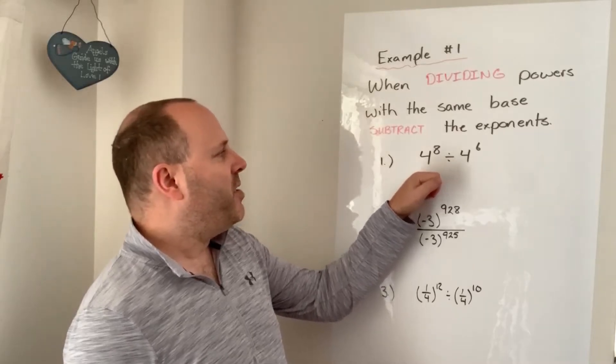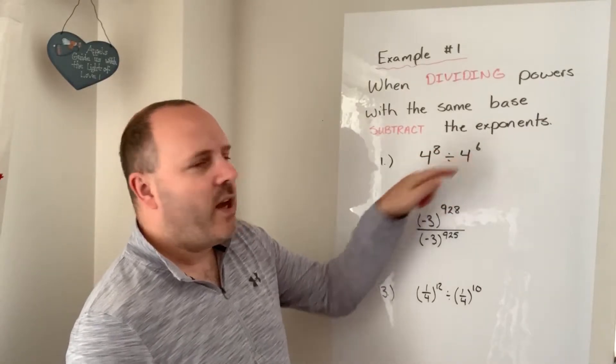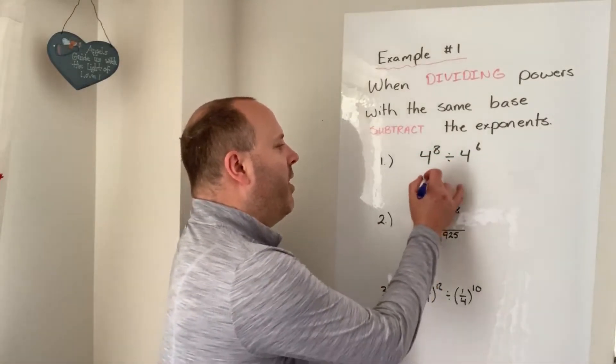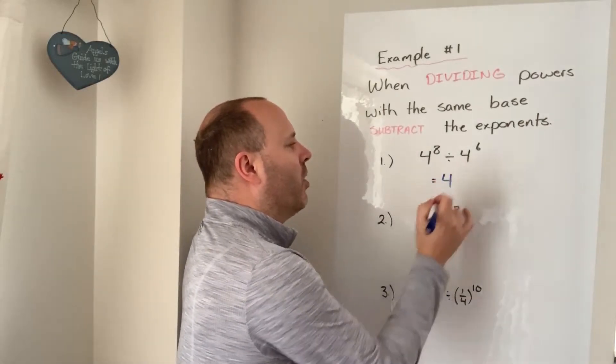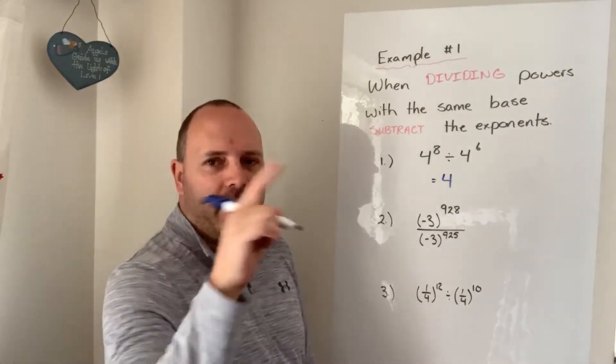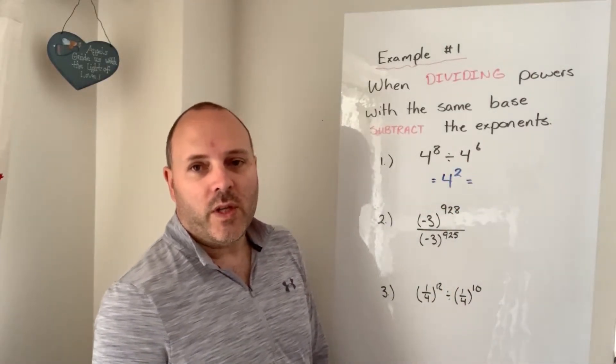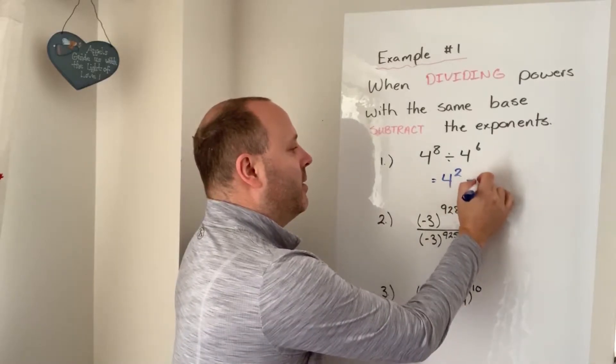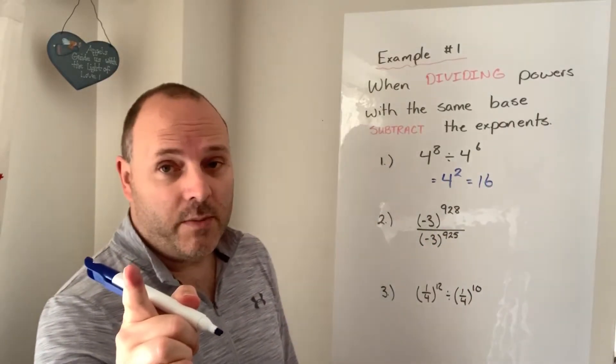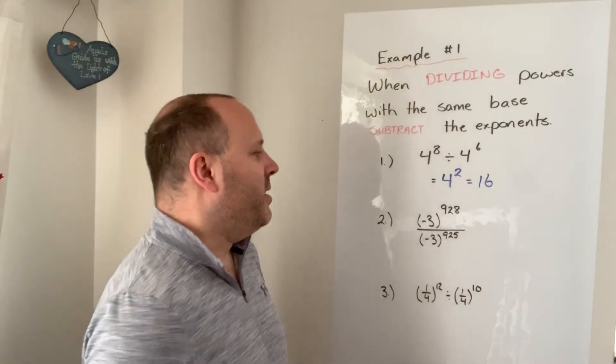Okay, so for example, you might see 4 to the power 8 divided by 4 to the power 6. That would be 4 to the power of 8 minus 6 is 2. And 4 squared, 4 times 4 is 16. Not 4 times 2, 4 times 4, 16.